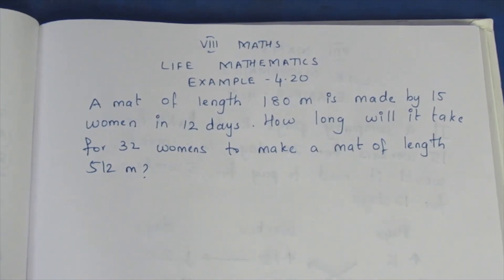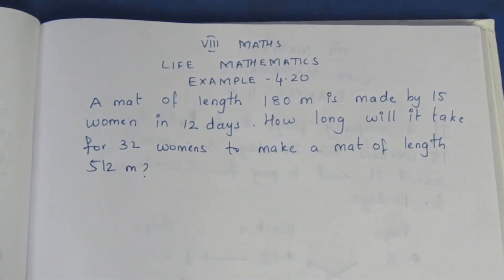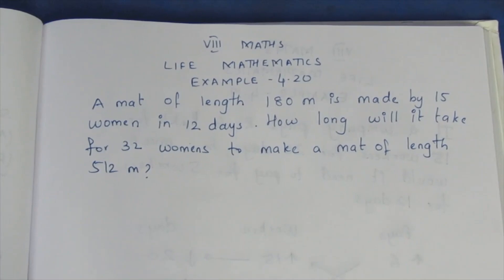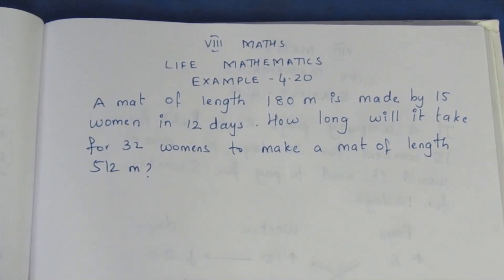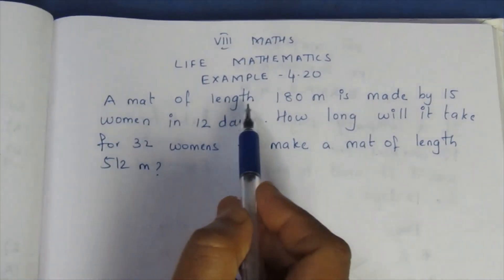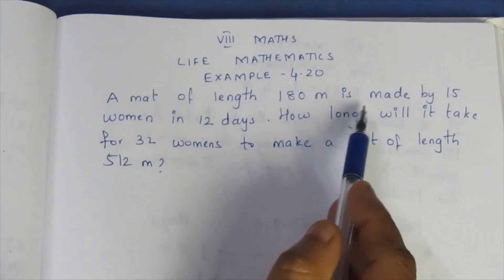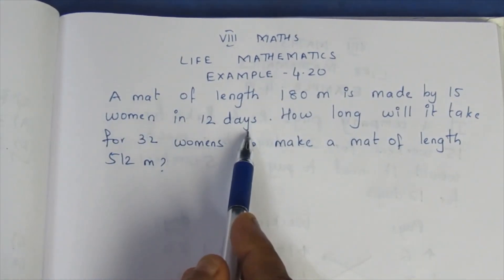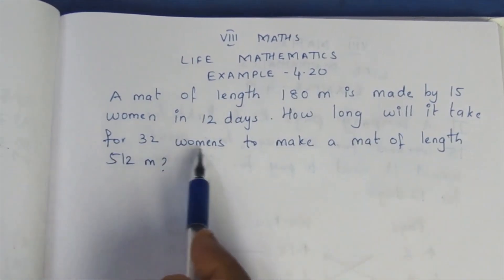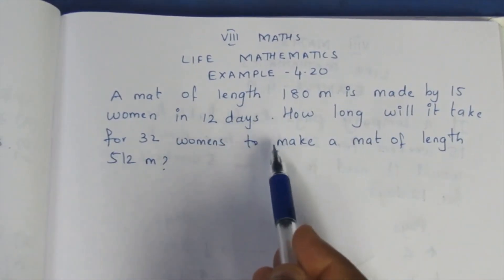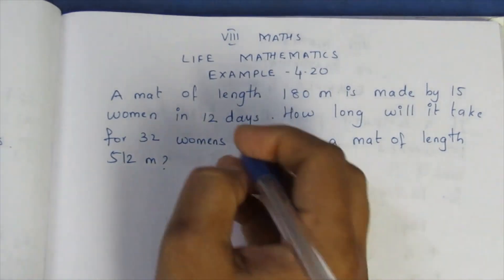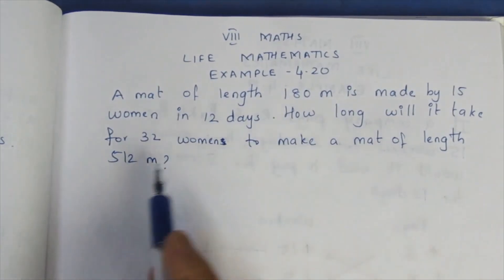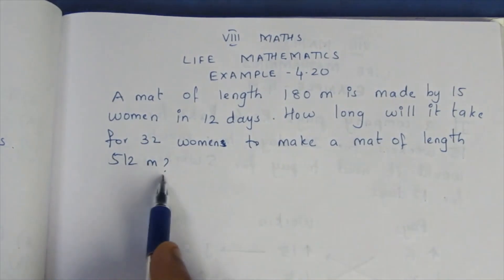Hello viewers, I am ITLEE. In the 8th Max Life Mathematics Example 4.20, we will see: A mat of length 180 meters is made by 15 women in 12 days. How long will it take for 32 women to make a mat of length 512 meters?